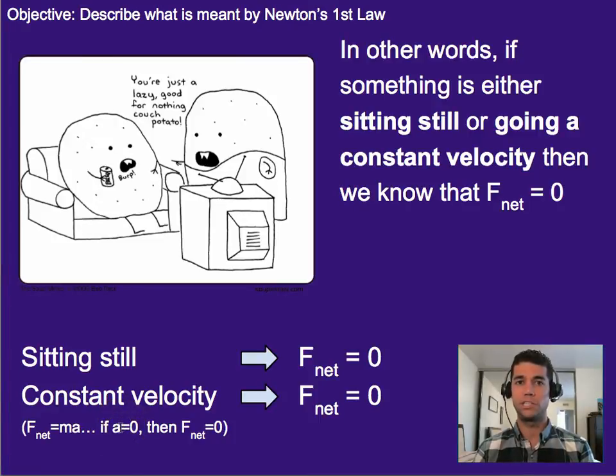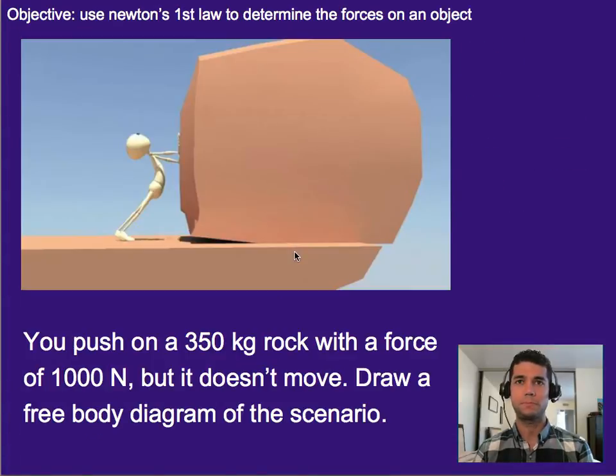So if acceleration is zero, and we plug that into mass times acceleration for net force, we're always going to get zero here for net force. So really, what this is saying with Newton's first law is just that if something is not changing its velocity, we know it's not accelerating. And if it's not accelerating, we know there's no net force on it. If you kind of walk it through that way, it seems a little bit more logical, but it's still kind of weird to think about. So let's give it a shot with a few practice scenarios.